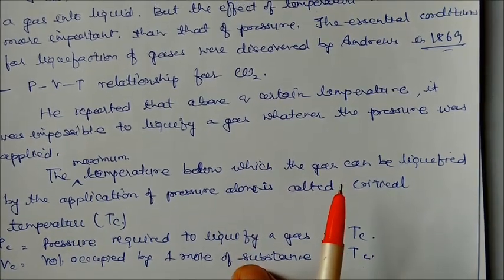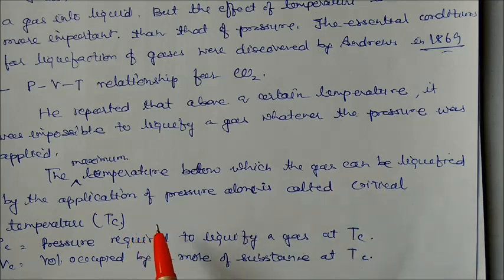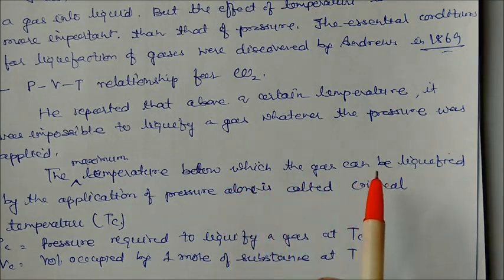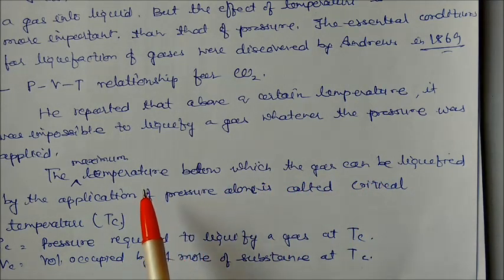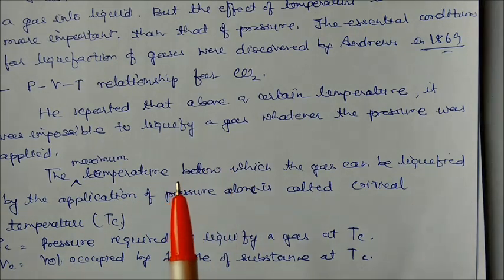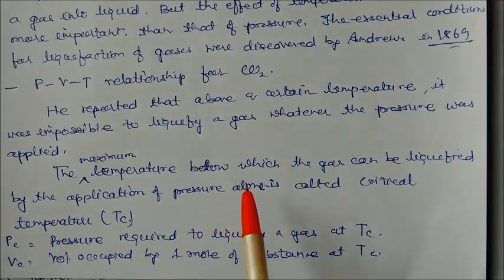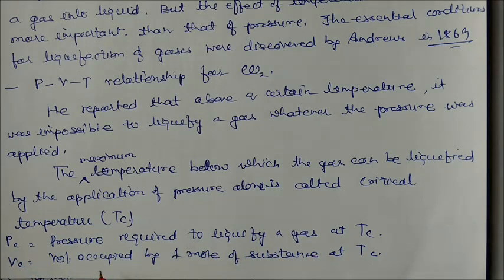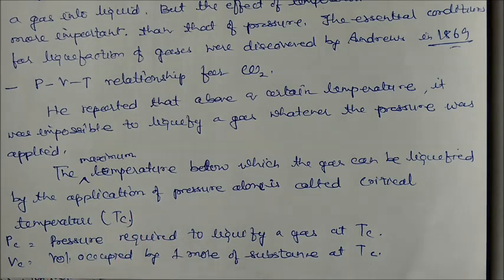The maximum temperature below which a gas can be liquefied by application of pressure alone is called the critical temperature. At this critical temperature, the pressure required to liquefy the gas is called the critical pressure, and the volume occupied by one mole of the substance at critical temperature is called the critical volume. So three terms are introduced: critical temperature, critical pressure, and critical volume.